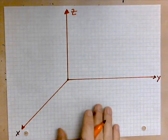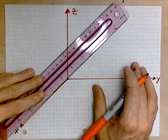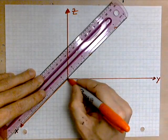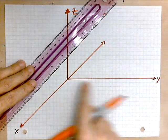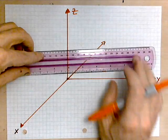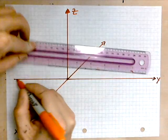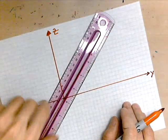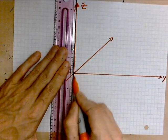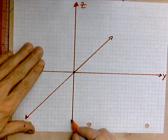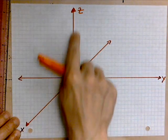I've drawn only the positive axes, so now let's draw in the negative axes. Just as x is positive, it can also be negative — and that is back there. Just as y can be positive, it can also be negative, so that is on the left. And just as z can be positive, it can also be negative, so that is straight down. So this is our coordinate space: x, y, z.